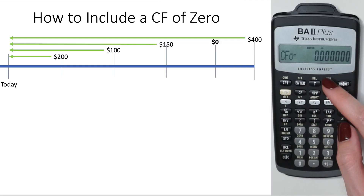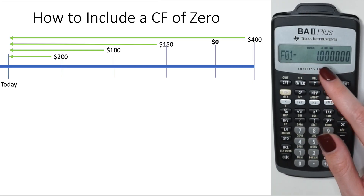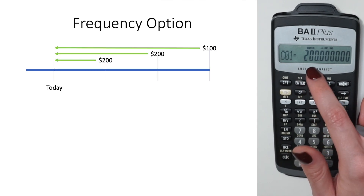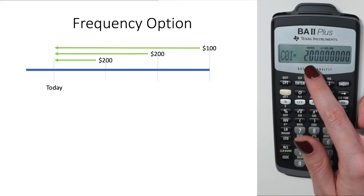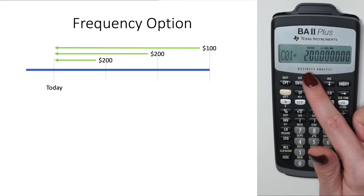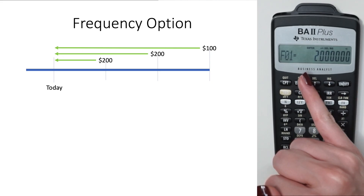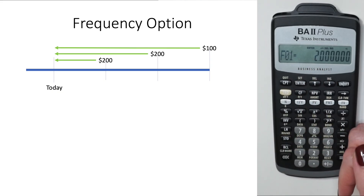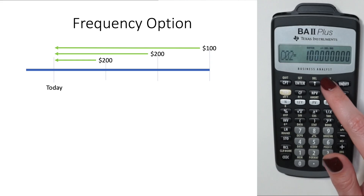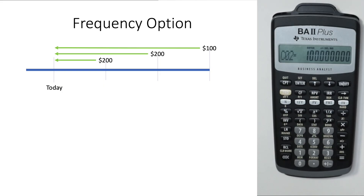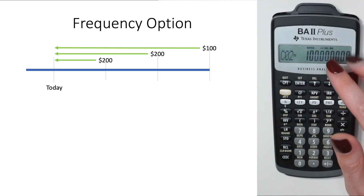The frequency option is tricky. You can only use it when two cash flows are exactly the same in consecutive periods. For example, if $200 occurs in year one and year two, you enter $200 with frequency two. But then the next cash flow label becomes 'cash flow two,' which actually represents the third period — so keep that in mind when using frequency with multiple identical consecutive cash flows.